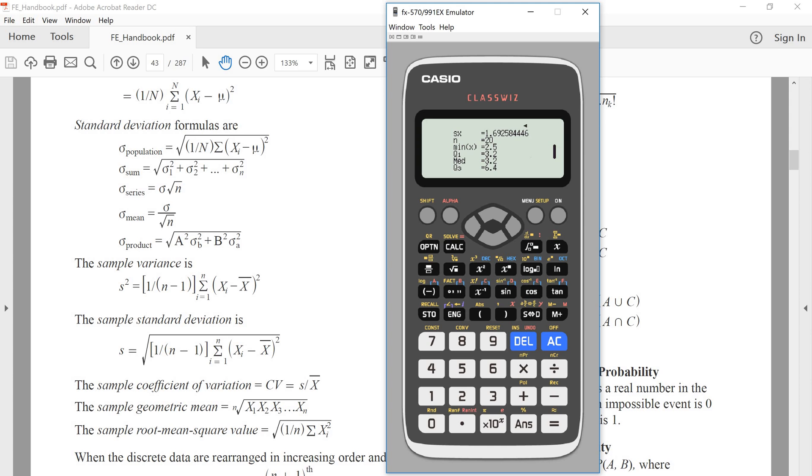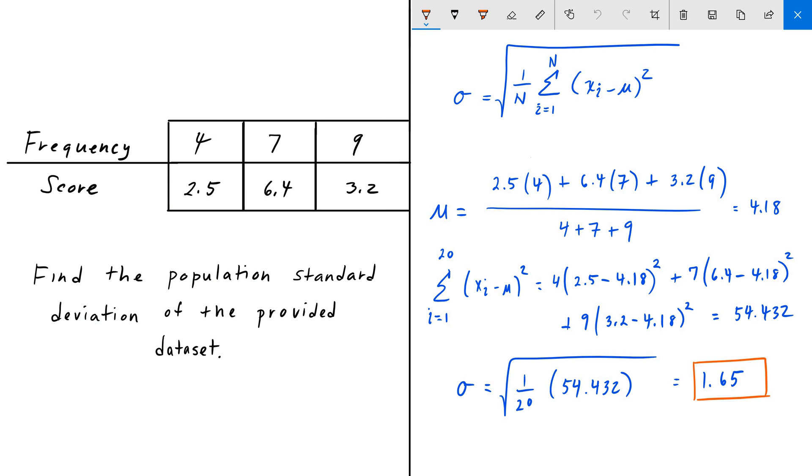You know, it may be a little time consuming to work all these numbers out, and these are only three scores. Imagine if you had five - then you would have five summations that you'd have to take the sum of. So anytime that you can save on the exam definitely is a plus.